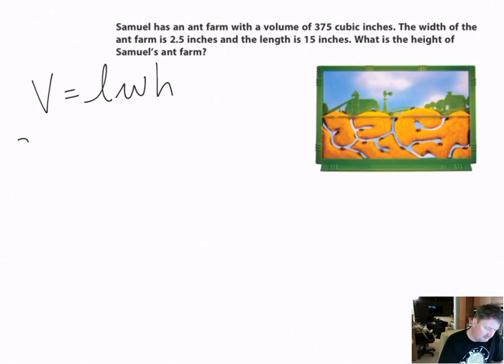We know our volume is 375, so 375 gets substituted for V. The width is 2.5 inches and the length is 15, so I have 15 times 2.5. I'm going to multiply those two numbers together times the height, but I don't know the height - that's what I'm looking for.